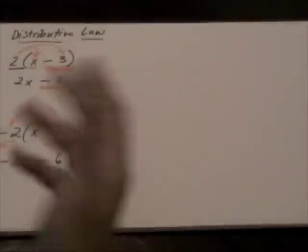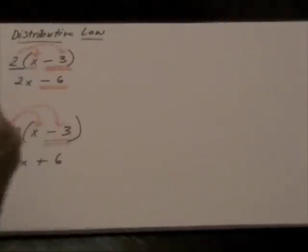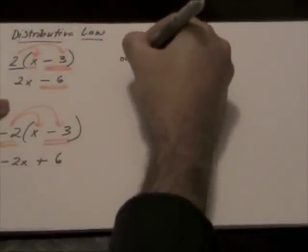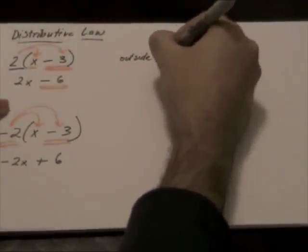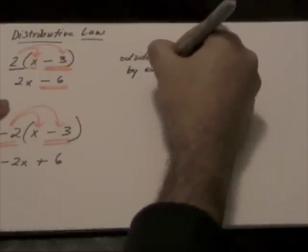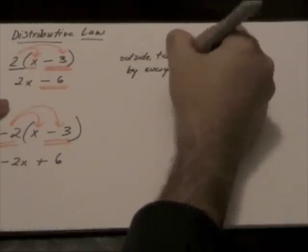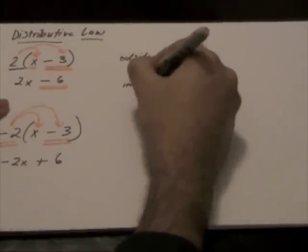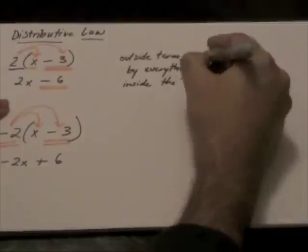So therefore, keep in mind that when we are multiplying, when we are using the distributive law, we are multiplying the outside term by everything inside the brackets.